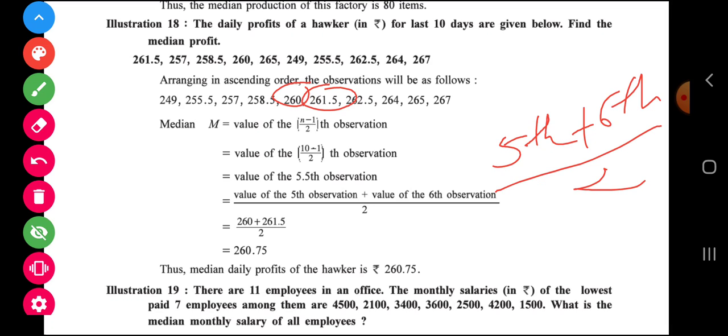So 260.75 is the answer of median. So practice these two examples of calculation of median for ungrouped data. In the next video we will continue.